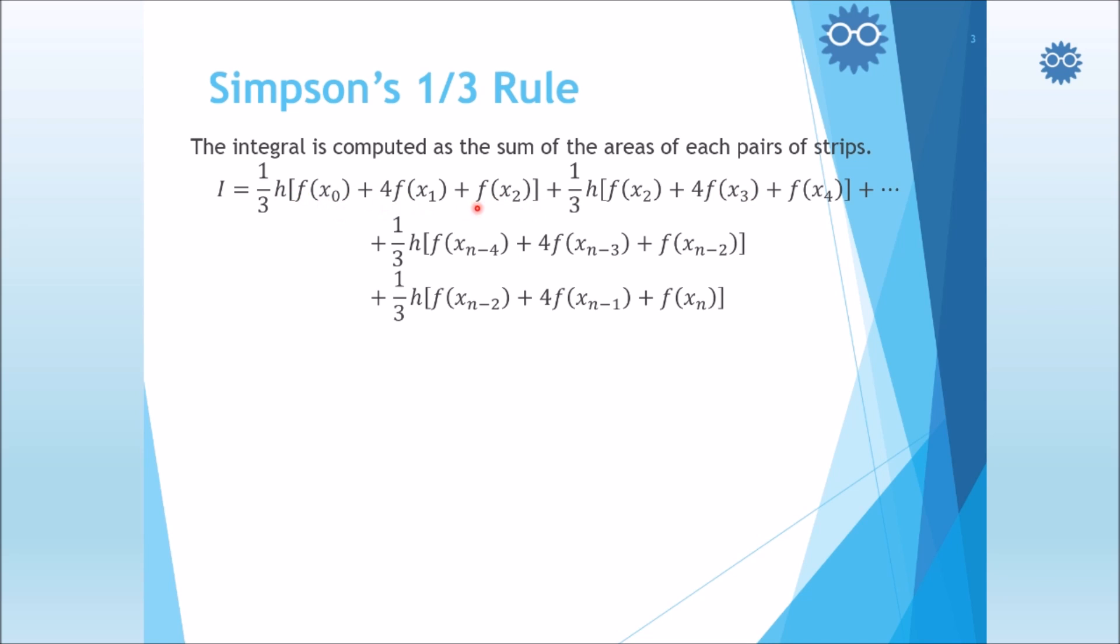We sum every two strips, from first two strips to the last ones. By combining the terms which have similar multipliers, for example, we have f(x sub 0) multiplied by 1, and f(x sub n) multiplied by 1 also. We can combine these two. Also, we can combine those multiplied by 4, and those which can be added to each other because there are repeated terms here. Finally, we can get this form.